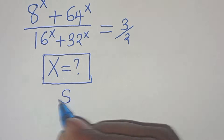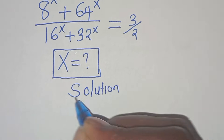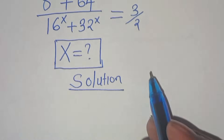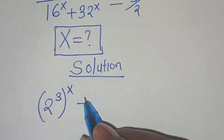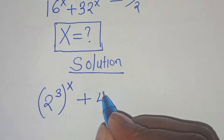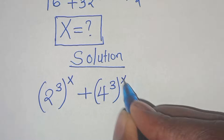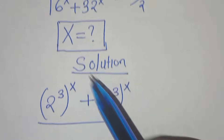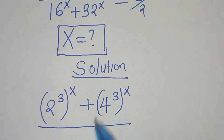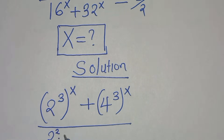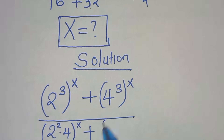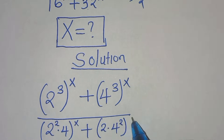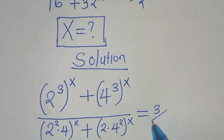Now let's provide a solution. We can express 8 to the power of x as (2 to the power of 3) raised to the power of x, plus 64, which we can express as (4 to the power of 3) raised to the power of x, divided by 16 to the power of x, which we can express as (2 squared times 4) raised to the power of x, plus (2 times 4 to the power of 2) raised to the power of x. This is equal to 3 over 2.